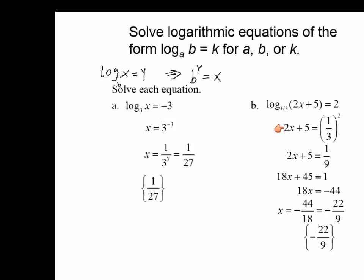This is a logarithmic equation converted to exponential. Now I don't have any log in here, so I can solve for x. 2x plus 5 is equal to 1 over 9. To solve for x, we multiply each term by 9 to eliminate the fraction. 2 times 9 gives 18x, 5 times 9 is 45, and 1 over 9 times 9 is 1 — so here's a linear equation.